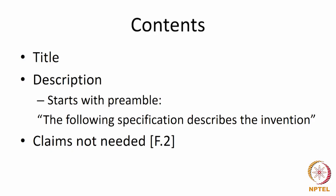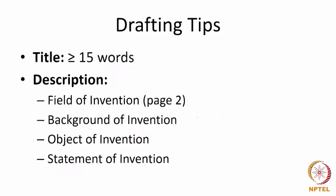Regarding contents, there is a title to the provisional, and a description that starts with the preamble: 'the following specification describes the invention.' Claims are not needed — Form 2 states that claims need not be mentioned for provisionals. Some drafting tips: the title should be less than 15 words; the description can have various headings such as field of invention, background of invention, object of invention, and statement of invention.